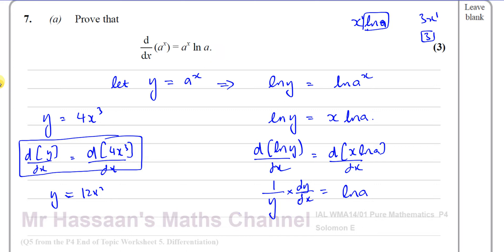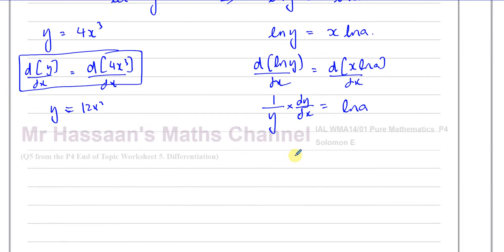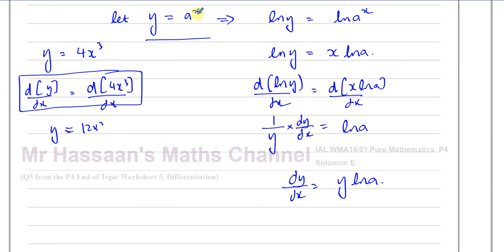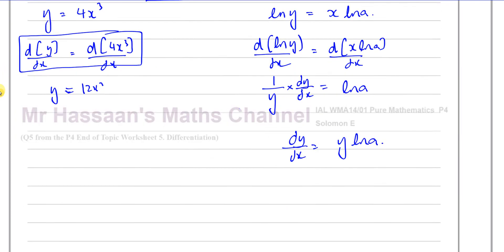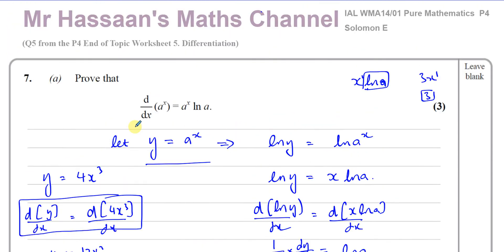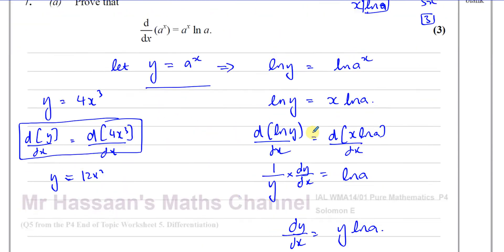So we have (1/y) · dy/dx equals ln a. Multiplying both sides by y gives dy/dx equals y times ln a. Since we defined y equals a to the power of x at the beginning, we replace y to get dy/dx equals a to the power of x times ln a — as required. That completes Part a: the proof that the differential of a to the power of x is a to the power of x times ln a.